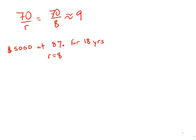Well, in 18 years, it would double twice. So after 9 years, we'd be up to $10,000, and after another 9 years, at the end of 18 years, we'd be up to $20,000. And $20,000 is answer choice A.